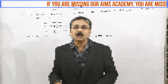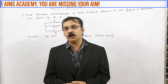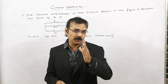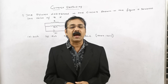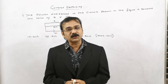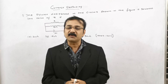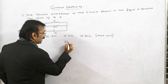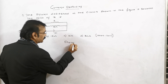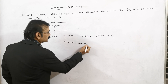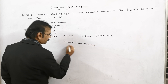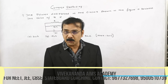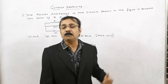Let us go for the shortcut method. We are going to do the same sum in a fraction of seconds, without using any formula and without using any concept. Let us finish it off in a fraction of seconds. So just I am writing the shortcut method. Before going to the shortcut method, please take your pen and check your notebook. It is very important — you need to know this important shortcut.